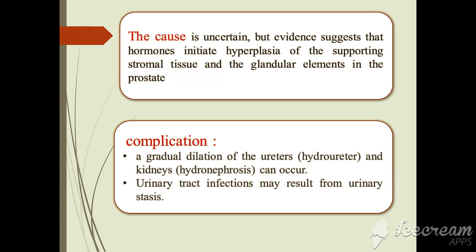Complications include gradual dilation of the ureters, hydroureters, and kidneys — hydronephrosis can occur. Urinary tract infection might result from urinary stasis, as the urinary stasis may cause organisms to proliferate and prepare an environment for the organism's proliferation.